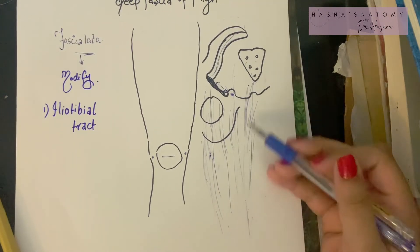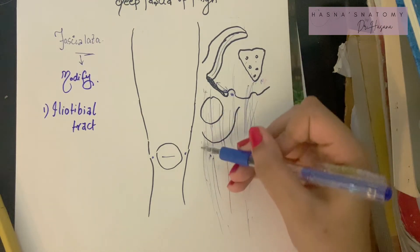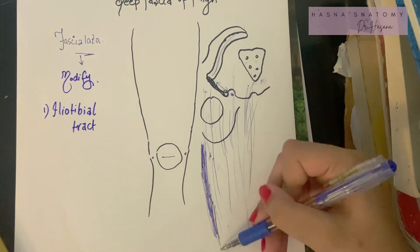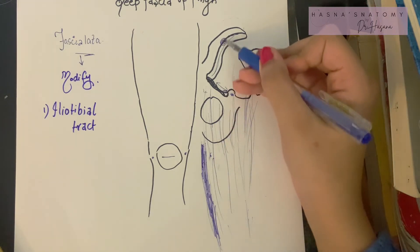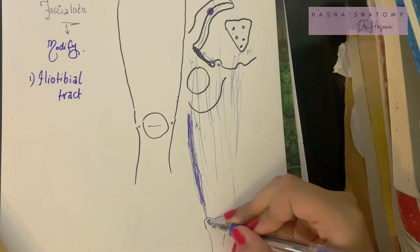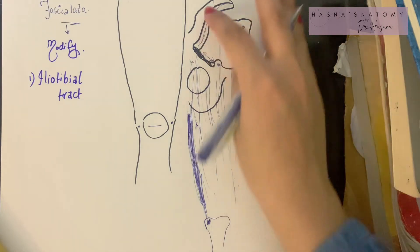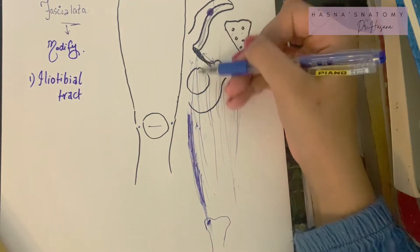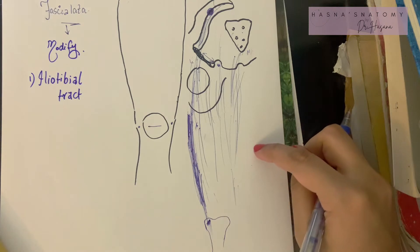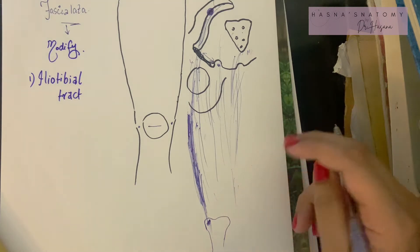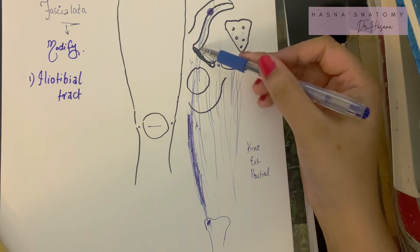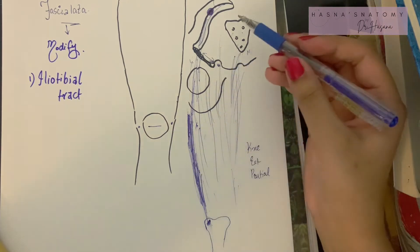The lateral part of the fascia is thickened to form the iliotibial tract. This thickening runs superiorly from the iliac tubercle and the capsule of the hip joint all the way inferiorly to the lateral condyle of the tibia. This long modification of the fascia lata is necessary for strengthening your knee during extension and partial flexion — the iliotibial tract stabilizes the knee in these movements.